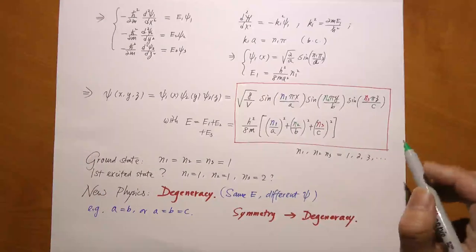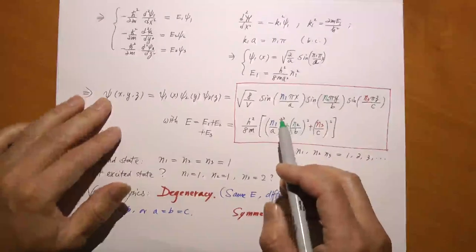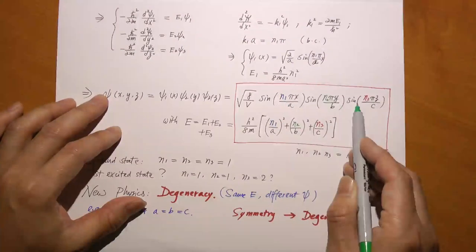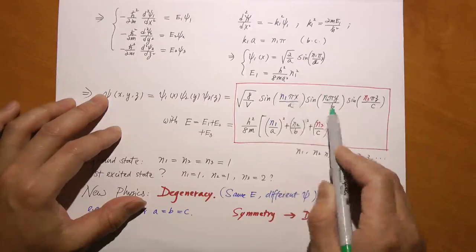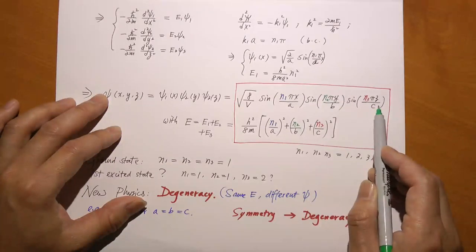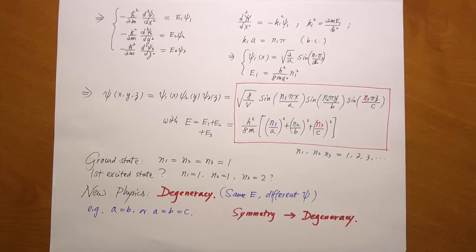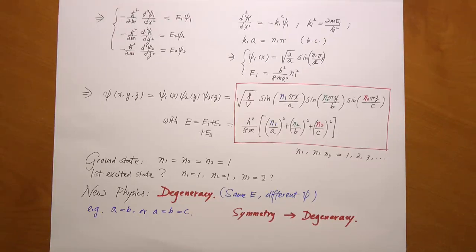So here is our new result. We got it without too much struggle because of the key idea: separate the variables into different functions and work out these functions separately. Look at the new physics we got. Instead of one quantum number, I have three quantum numbers: a blue one for the x direction, a green one for the y direction, and a red one for the z direction. The energy is still quantized, but it depends on three quantum numbers, N1, N2, and N3. When you go beyond one dimension, you're going to have two or three quantum numbers. Each dimension has its own quantization condition.